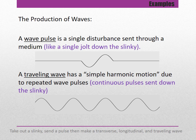The production of waves — two terms we need to know. A wave pulse is a single disturbance sent through a medium, like if you sent a single jolt down the slinky. A travelling wave has simple harmonic motion due to repeated wave pulses, where you are continuously sending pulses down the slinky.